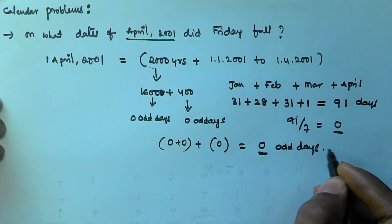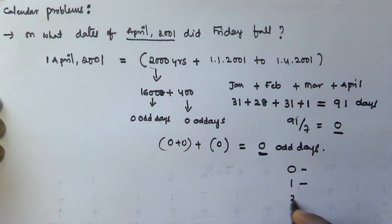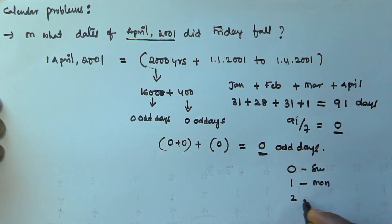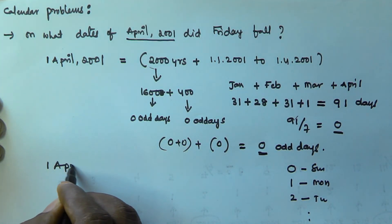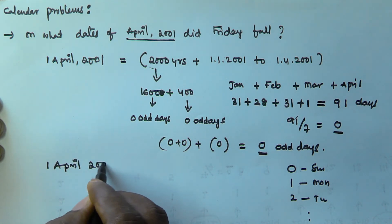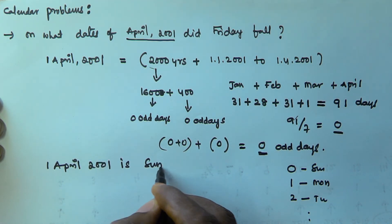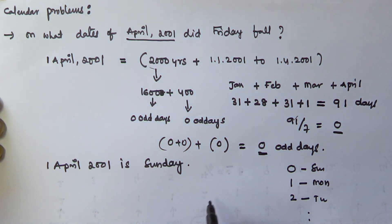0 odd days means Sunday, since we know that 0 = Sunday, 1 = Monday, 2 = Tuesday, and so on. So that means 1st April 2001 is Sunday.